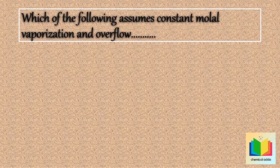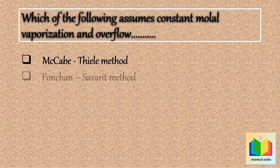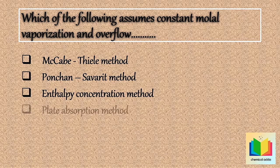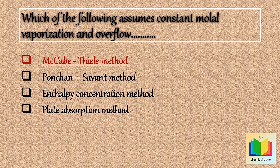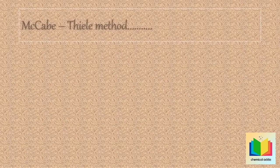Now next question: Which of the following methods assumes constant molal vaporization and overflow? McCabe-Thiele method; Ponchon-Savarit method; Tapi concentration method; or plate absorption method. Your time starts now. 10, 9, 8, 7, 6, 5, 4, 3, 2, 1. Stop. So the answer is: McCabe-Thiele method.